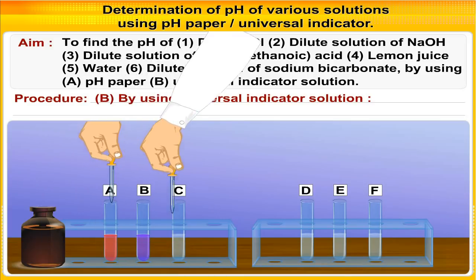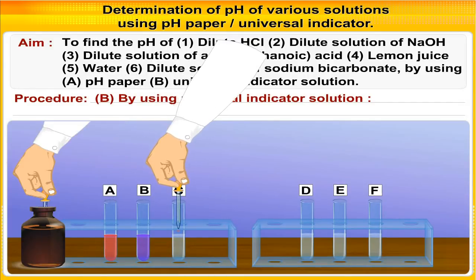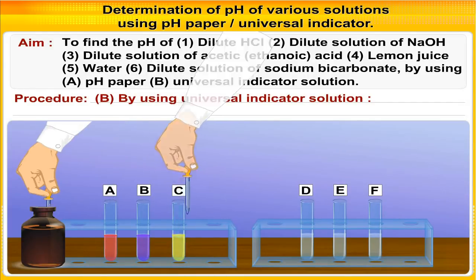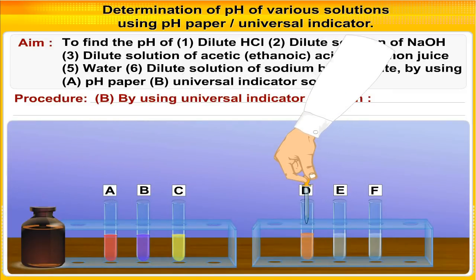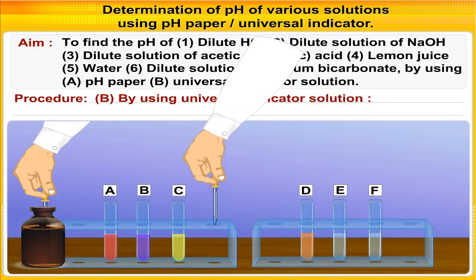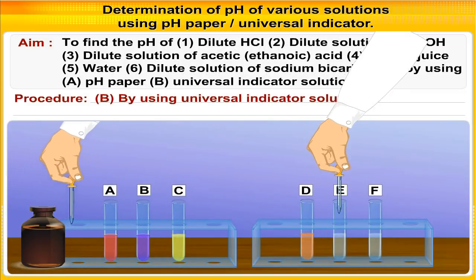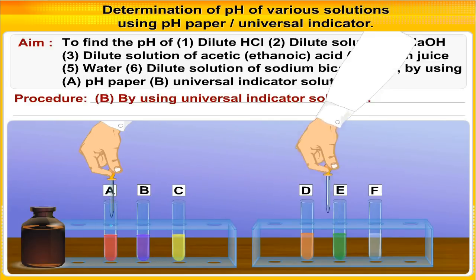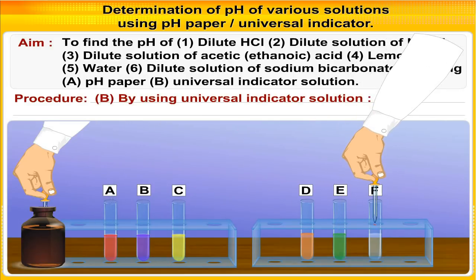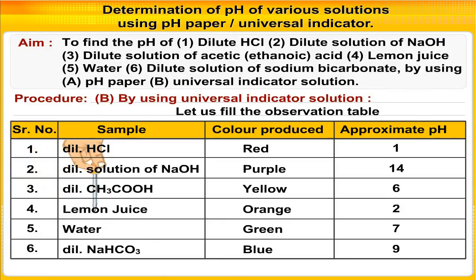Now repeat the same procedure for other samples and note their pH in the observation table. This is the observation table, same as the earlier table.